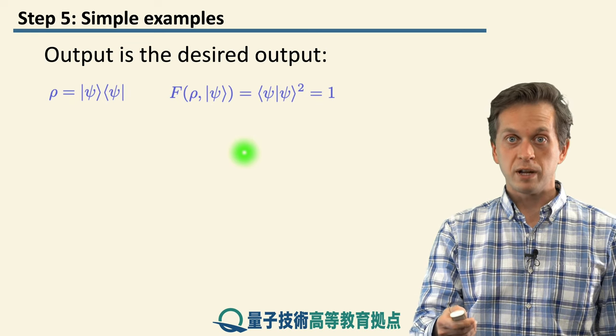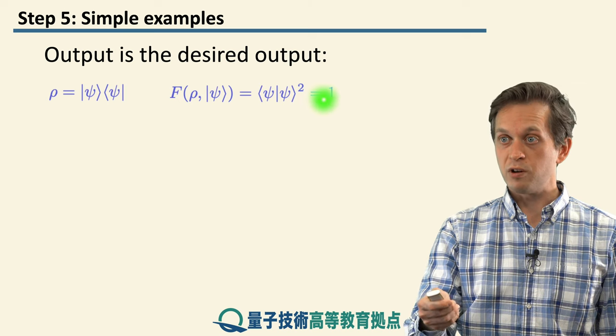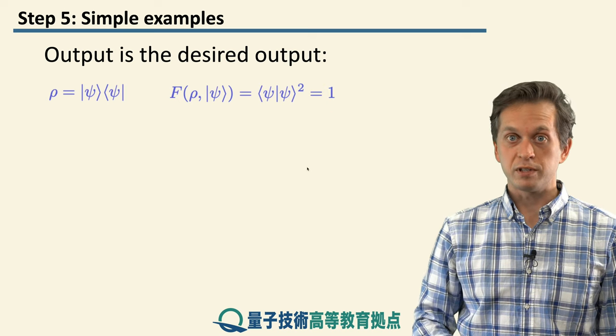And we know that the inner product of a normalized state with itself is just 1. So there we go, we have fidelity of 1, as we said on the previous slide.